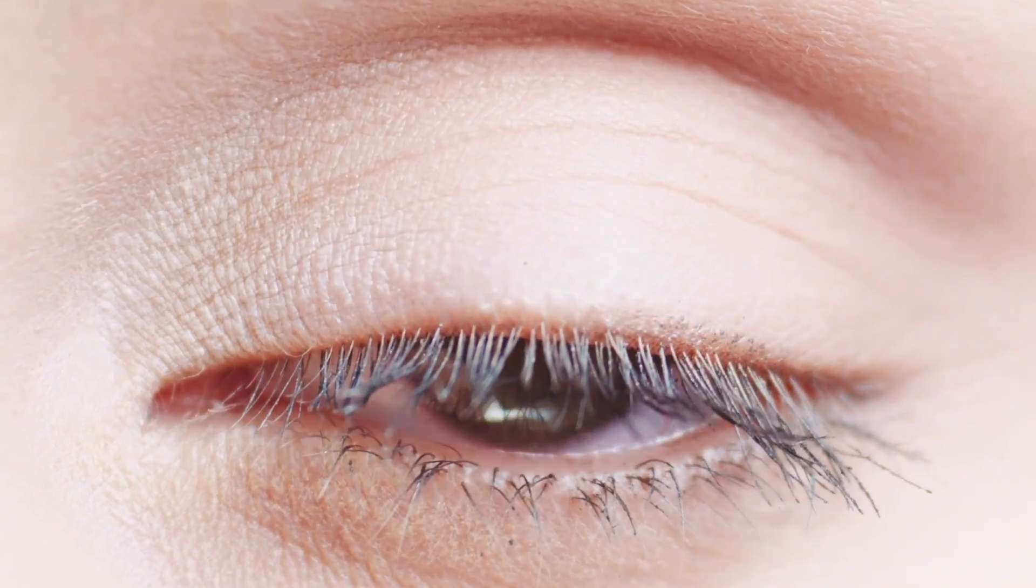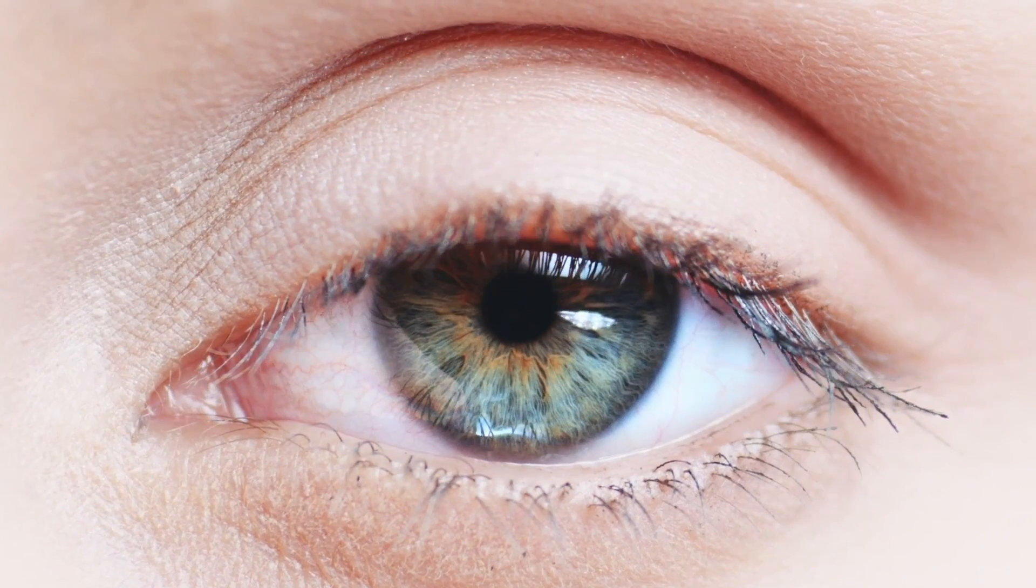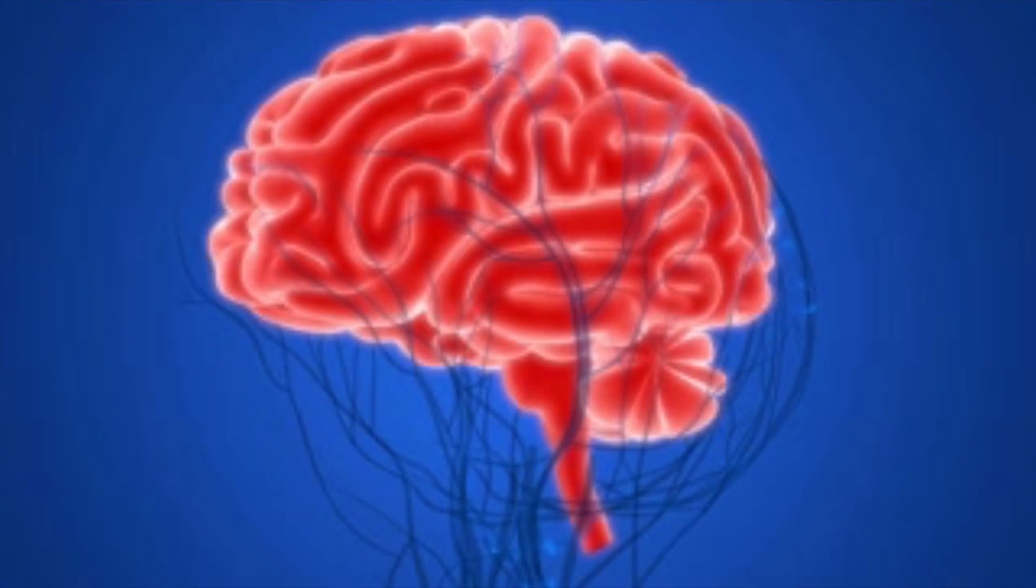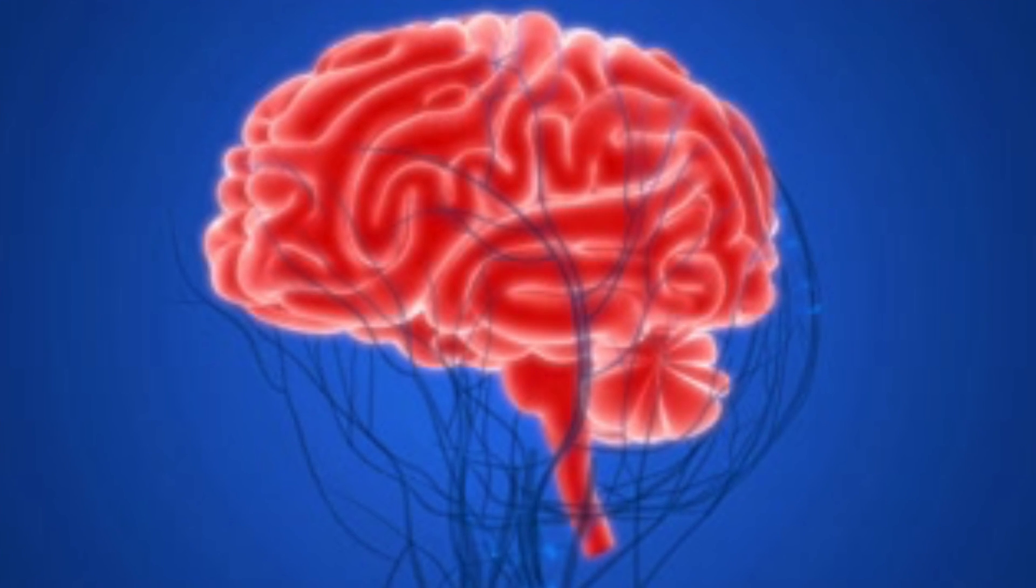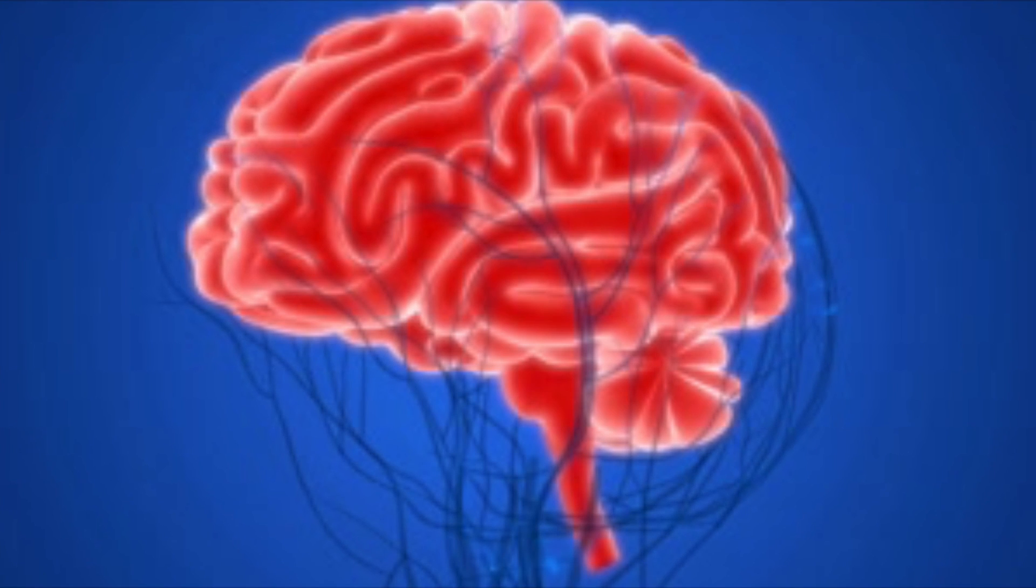This discovery was made by Professor George Paxons from Neuroscience Research Australia. This new region is called the endo-restiform nucleus. The professor had a theory it existed decades ago, but has only been able to recently confirm it due to advances in medical imaging technology.